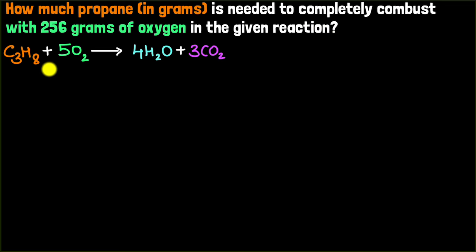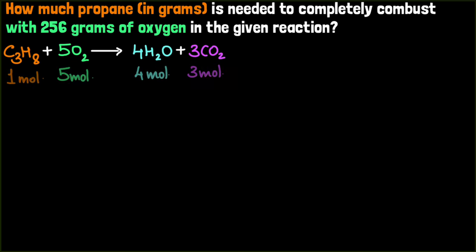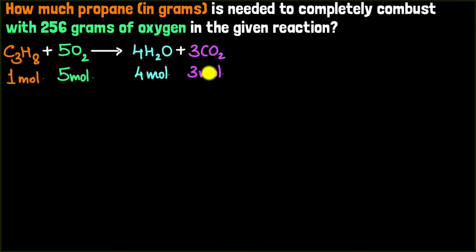The first step to any stoichiometry problem is to ensure we have a balanced chemical reaction. You can check that this reaction is balanced. Once we have that, we can write the mole ratio. We know that one mole of propane will always react with five moles of oxygen, giving four moles of water and three moles of carbon dioxide. For this reaction to work, this mole ratio is necessary.